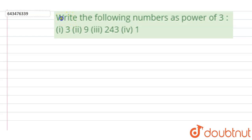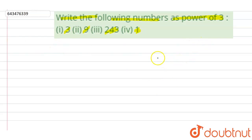The question says: write the following numbers as a power of three. The first one is three, the second one is nine, the third one is 243, and the fourth one is one. We have to represent these values as a power of three.